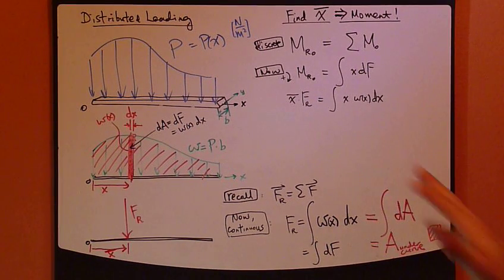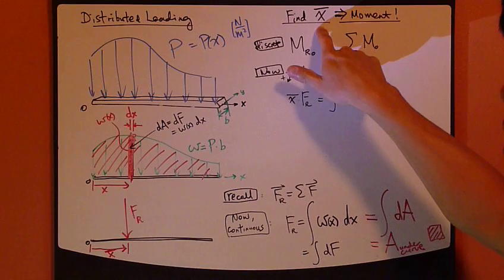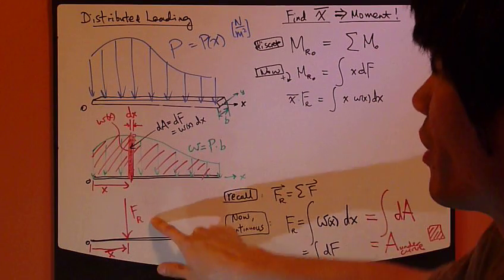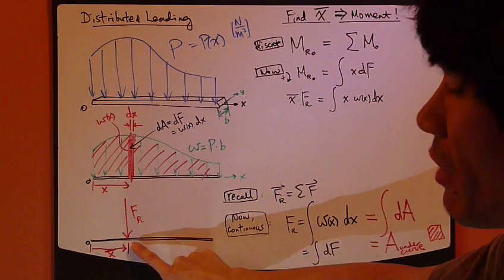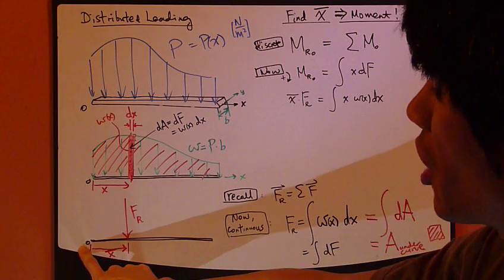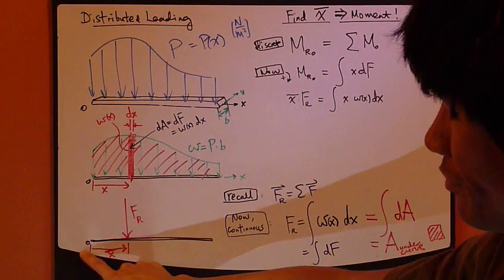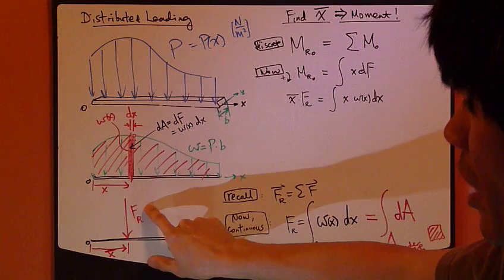So the natural next step is to find this location, x-bar, where this resultant force is being applied. x-bar is measured from this point O, the origin, to this location where x-bar is applied.